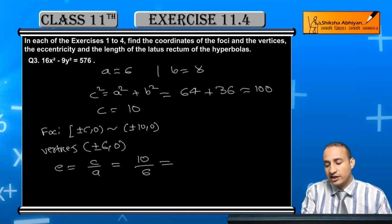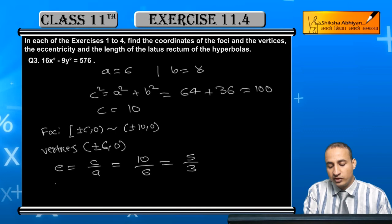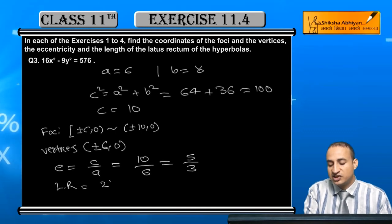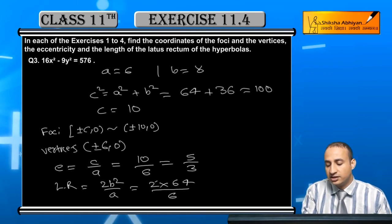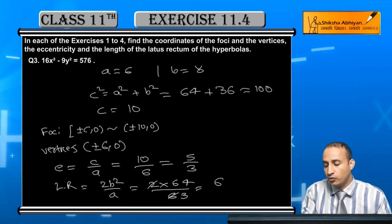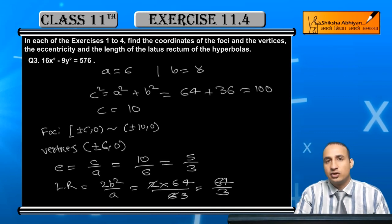And the length of the latus rectum is how much? 2b² by a. That means 2 into b² is 64, and this value is 6. 64 by 3 is the length of the latus rectum.